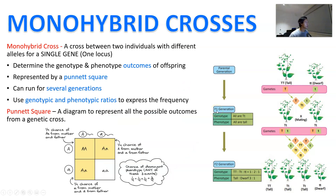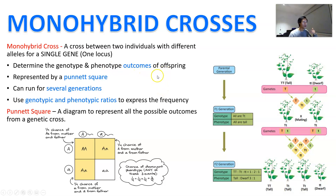A monohybrid cross is a cross between two individuals with different alleles for one gene — we are looking at a single gene locus only. We're going to determine the genotype and phenotype outcomes of the offspring. That's the purpose of the cross: we want to figure out the likelihood of the offspring having the trait or not. A monohybrid cross is represented by a Punnett square and can be run over one or several generations.